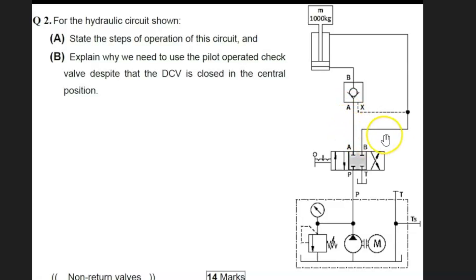If all of a sudden oil started leaking through. So that's why we have this X line here. This is a pilot signal. We know it's a pilot signal because it's a dashed line and it doesn't create any actuator movement. And that's why we identify it as a pilot line.